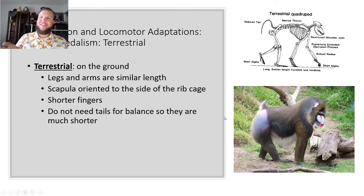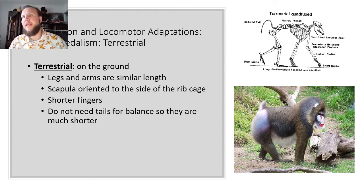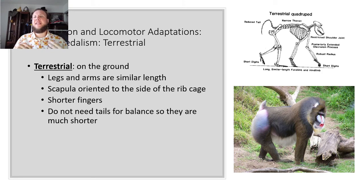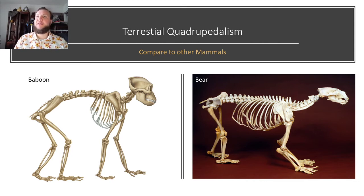The other type is terrestrial quadrupedalism — here we have a mandrill, locomoting on the ground. The legs and arms are a similar length because they don't need to be in the trees as much. Scapulas are also to the side, they have shorter fingers because they don't need to grasp, and tails are much shorter since they don't need them for balance. A comparison between a baboon and a bear shows how similar their skeletal structure is — this is analogous, as both are adapted to similar terrestrial environments.